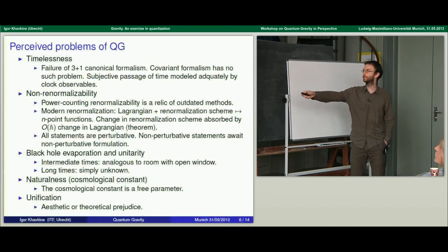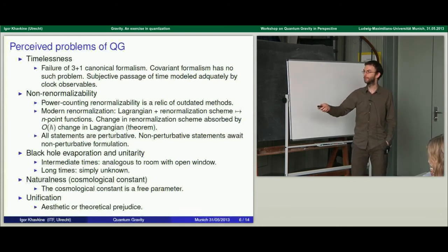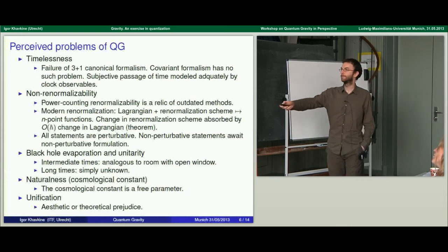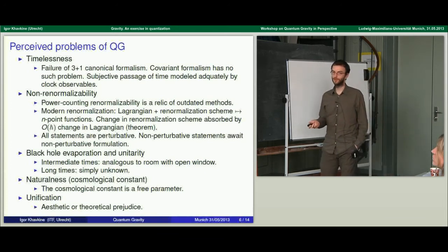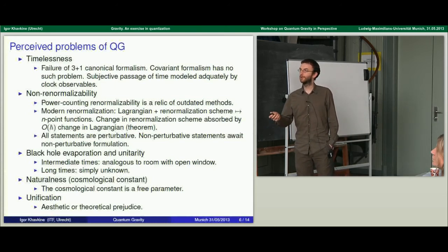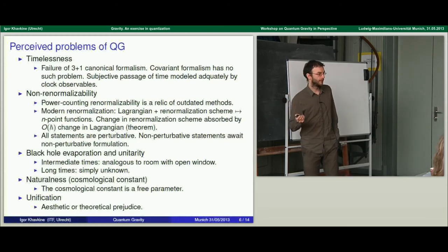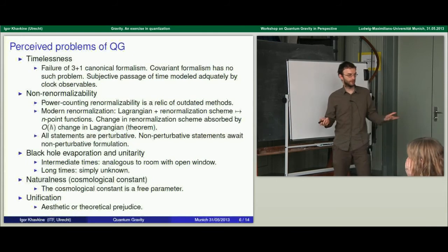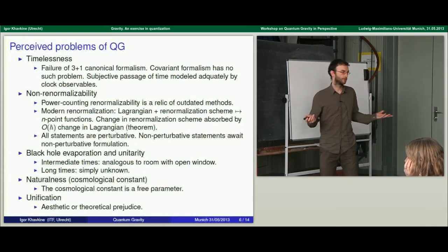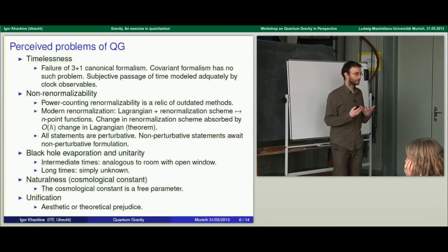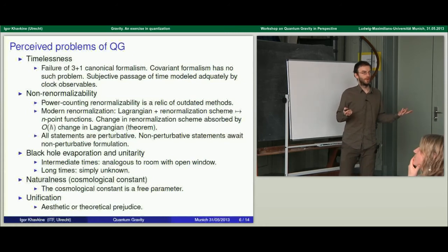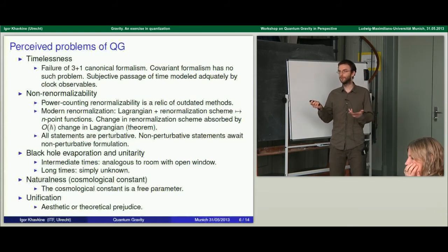This statement about renormalization is perturbative, and we don't have a non-perturbative statement, simply because we don't have a non-perturbative formulation of the quantum field theory. Very quickly: black hole evaporation is often claimed to be a challenge to be resolved, but I say there's no particular contradiction to be resolved here, because the horizon of a black hole is very much like an open window in a room. If you neglect the outside of the room, you do not expect the theory describing it to be unitary. Similarly, if you neglect the interior of a black hole, you do not expect your evolution to be unitary. At long times, where the structure of the singularity really becomes important, the answer is simply unknown.